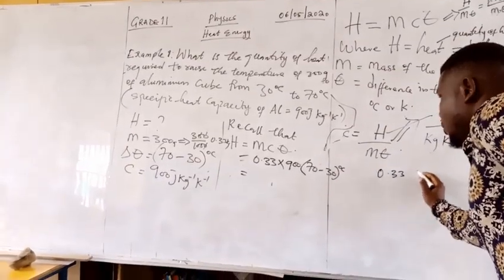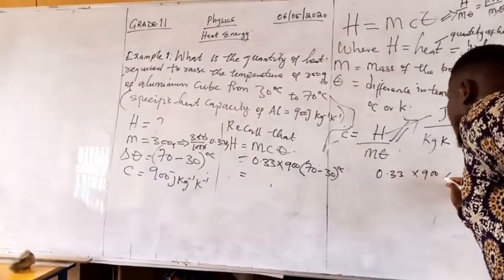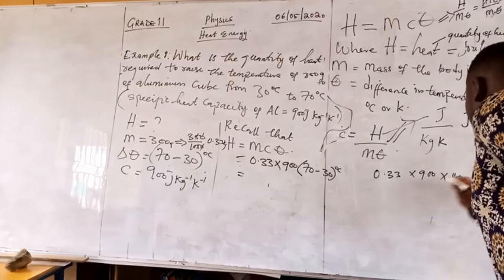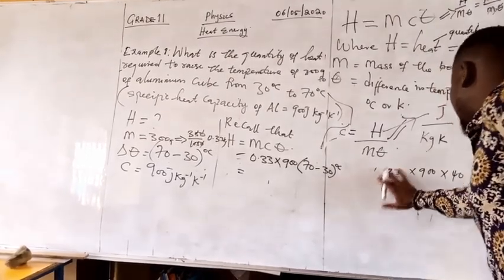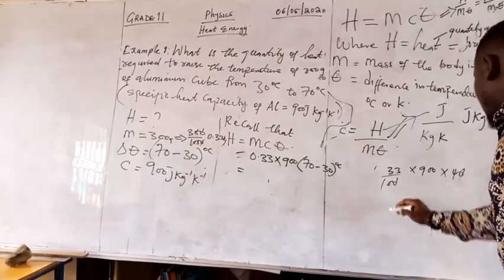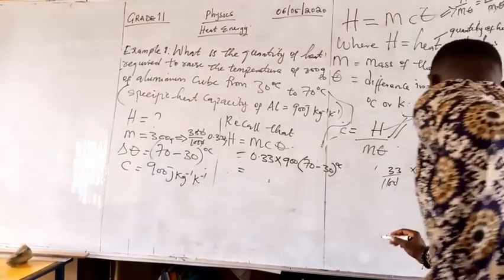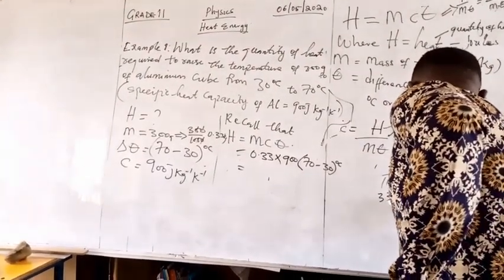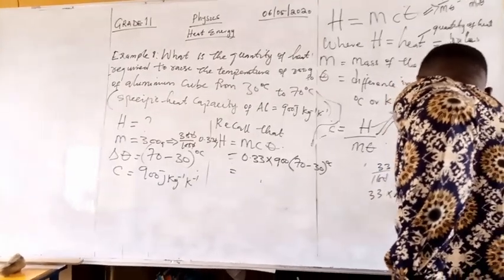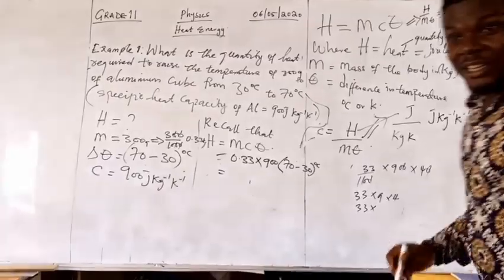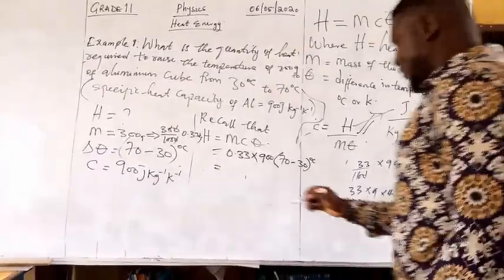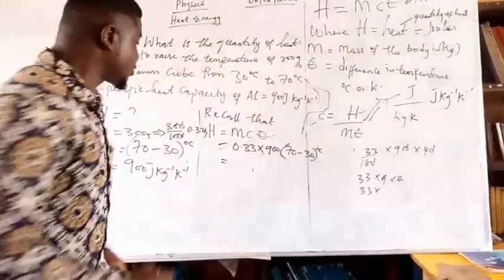This is going to give me, so I have 33 over 100, then 33 times 9 times 4, which gives me 11,880.